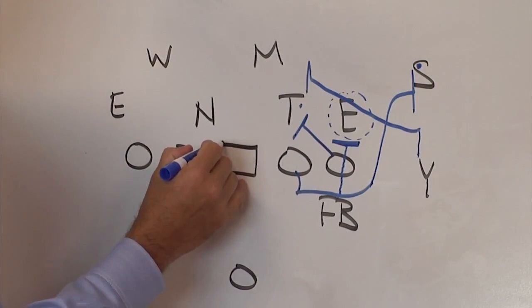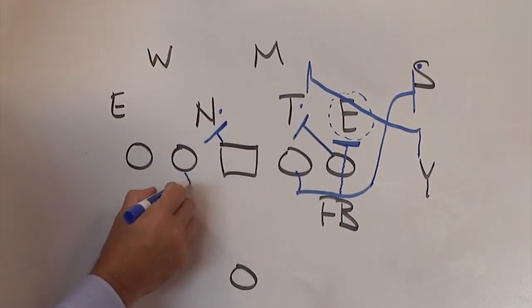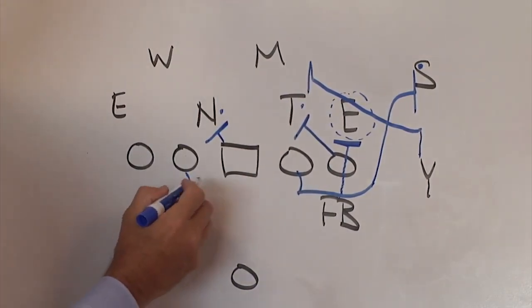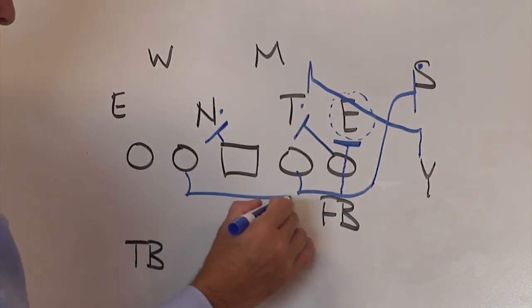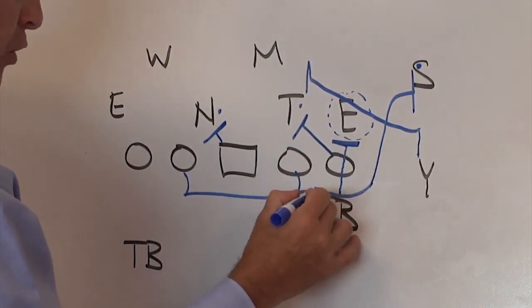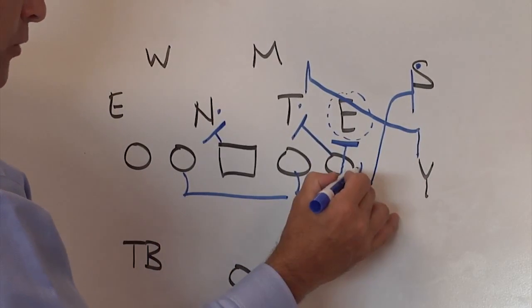On the backside, our center is blocking back, aiming high. Backside guard, pulling, getting depth. He is going to pull and go tight off of the block of the fullback. I don't want any space in there. I want him to go tight.